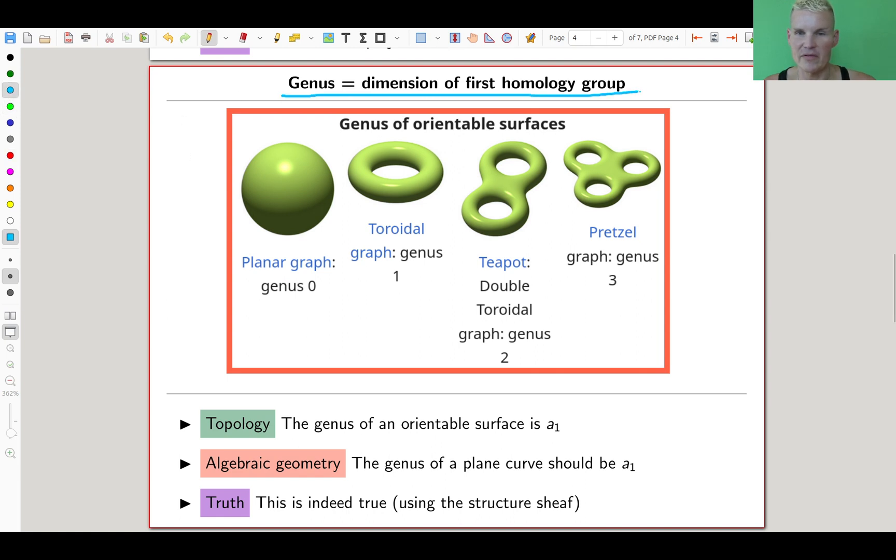Something I think is really nice is that the genus is usually defined as the dimension of the first homology group, so a_1 in my notation. It works really well. Genus should be the number of holes, and it's kind of a rigorous definition of what a hole is. The sphere has no holes and indeed the sphere a_1 is 0. For a torus has one hole.